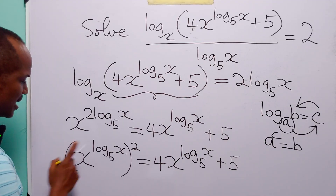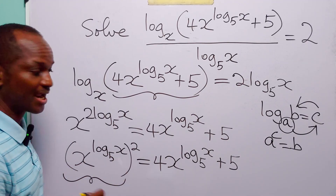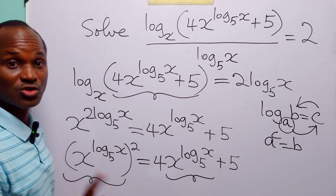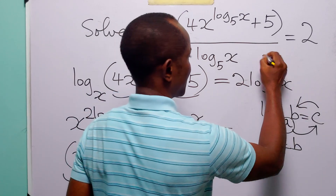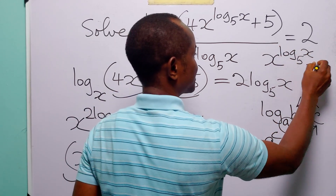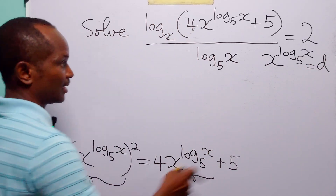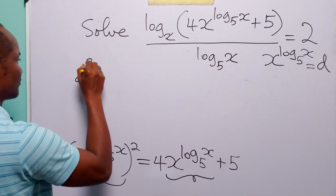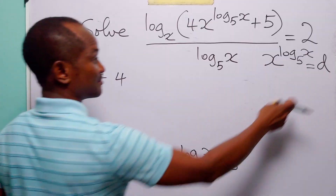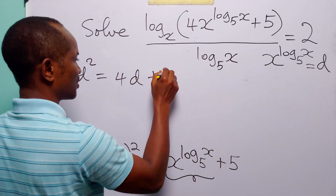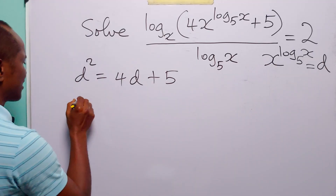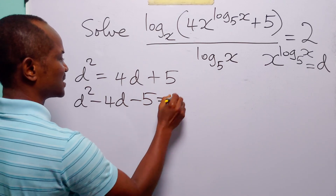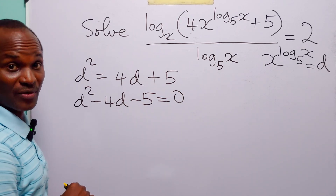Now look at this equation. Here we have x to the power log base 5 of x, and here we also have x to the power log base 5 of x. So let us do a substitution. Let x to the power log base 5 of x be equal to d. With this substitution, we can rewrite this equation as d squared equals 4d plus 5. Rearranging, we have d squared minus 4d minus 5 equals 0, so we can factorize this quadratic equation.